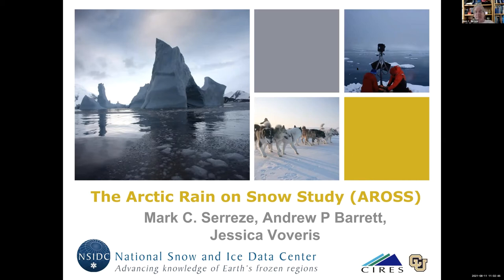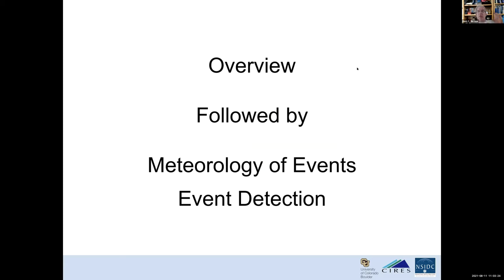We've also got Andy Barrett, who has been with NSIDC a long time. We've worked on many different studies. Andy does a lot of work on remote sensing and atmospheric reanalysis data. And Jessica Vovras is a grad student here — she got her degree from Oklahoma and was an operational meteorologist for NOAA, which fits perfectly with this season. She's now back at the University of Colorado working with me on this project.